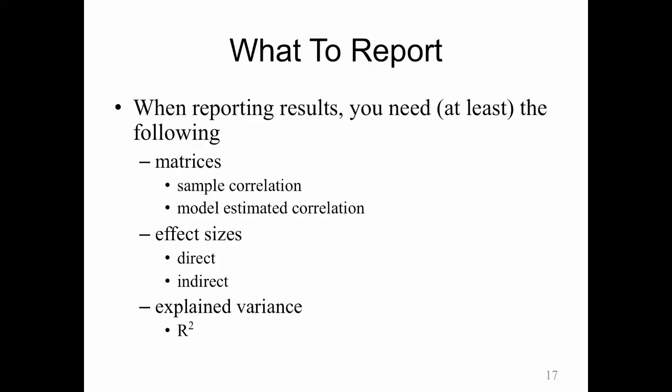So what do you actually report when it's all said and done? Well, a really good path analysis report would report both the sample matrix and the model estimated correlation matrix. It would report the effect sizes, the direct and indirect effect sizes, and then the explained variance. Now, if you haven't had a chance to read that chapter I put up on Blackboard, now would be the best time to read it. In some ways, it's better to read it after hearing this stuff than reading it before.